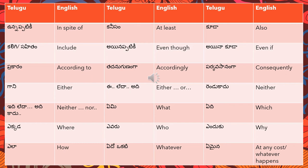'Prakara ante' means 'according to' - 'e prakara ante' means 'according to this'. 'Tadhanu guananga ante' means 'accordingly'. 'Pariyavasaananga ante' means 'consequently' - 'dheen pariyavasaananga' meaning consequently from this.